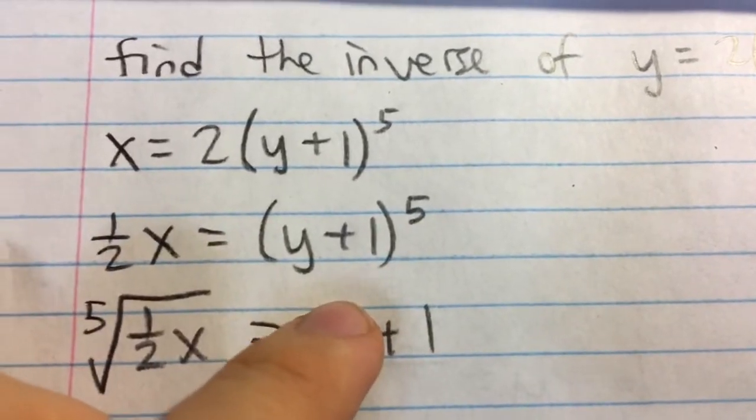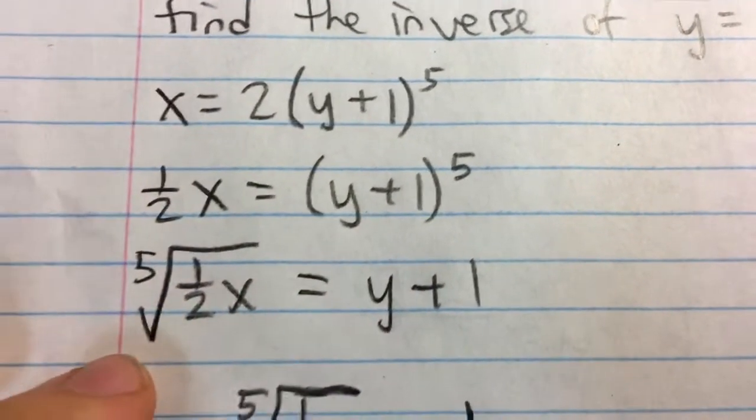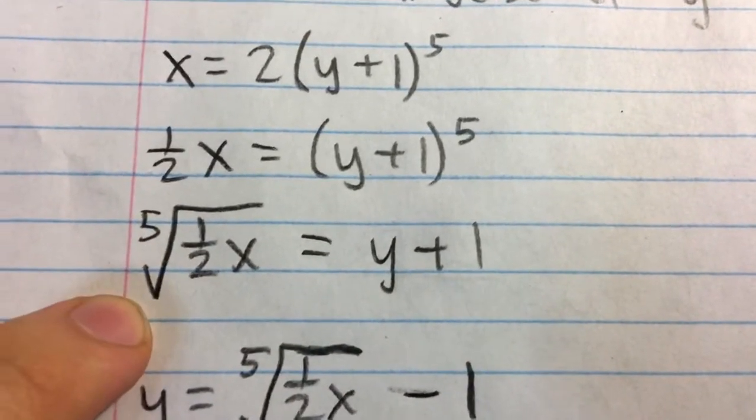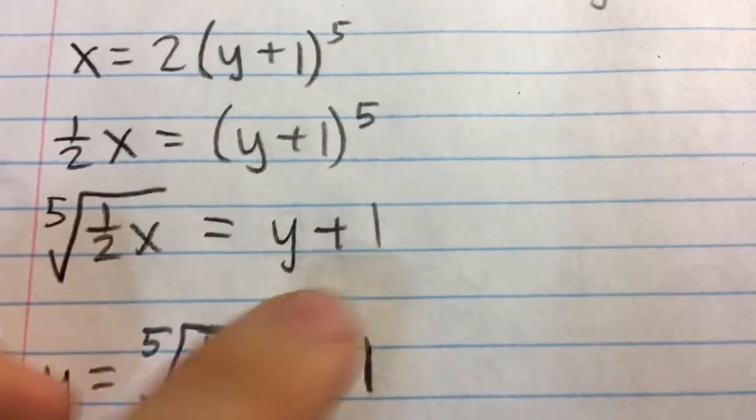So to undo the fifth power, I'm going to take the fifth root of both sides of the equation. Notice I have the fifth root of one half x on the left, and it kind of cancels out the fifth power.